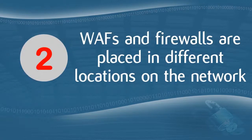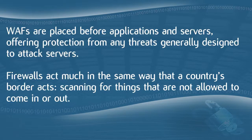The second difference is that WAFs and firewalls are placed in different locations on the network. Generally, a standard firewall is placed on the edge of the network, acting as a barrier between known, trusted networks and any unknown networks. WAFs are placed before applications and servers, offering protection from general threats designed to attack servers. This dictates the primary roles of each — firewalls act like a country's border, while a WAF operates more on the application side.